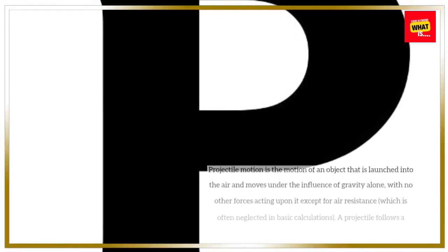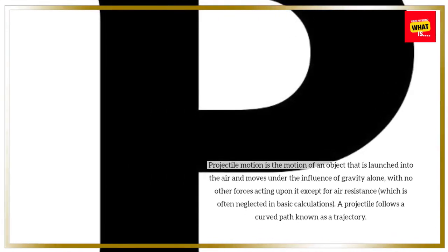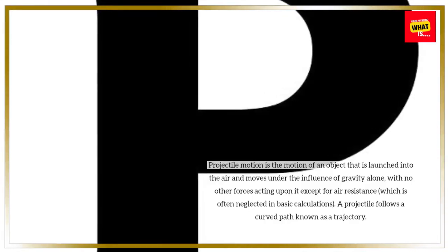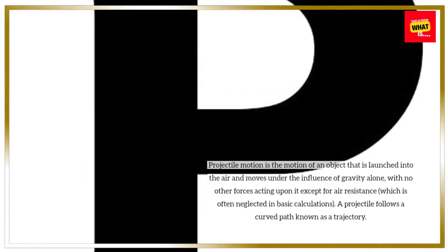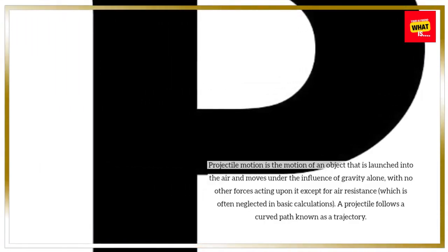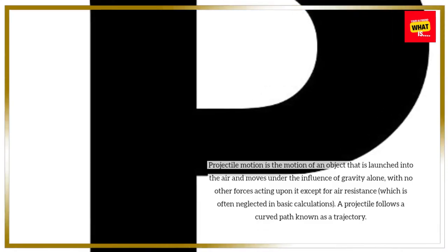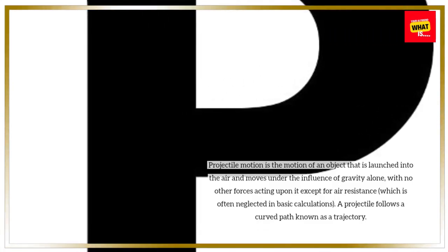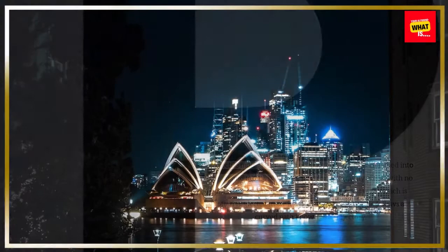Projectile motion is the motion of an object that is launched into the air and moves under the influence of gravity alone, with no other forces acting upon it except for air resistance, which is often neglected in basic calculations. A projectile follows a curved path known as a trajectory.